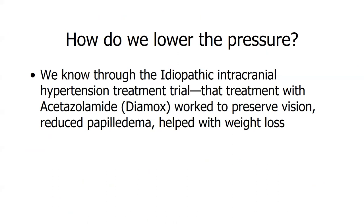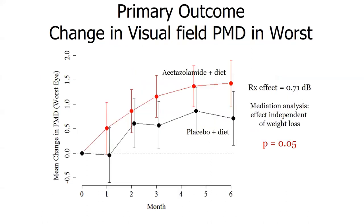When patients first present to our clinic, the priority is to relieve pressure from the optic nerves to prevent vision loss. We give acetazolamide, which has been shown in several trials to preserve vision and reduce papilledema, and may also help with weight loss. In the Idiopathic Intracranial Hypertension Treatment Trial, in which the University of Utah Moran Eye Center participated, acetazolamide combined with a diet program produced better visual field outcomes than placebo plus diet.